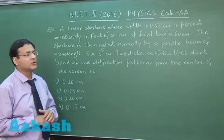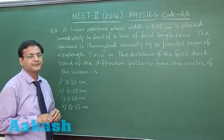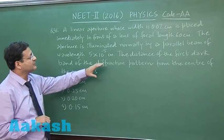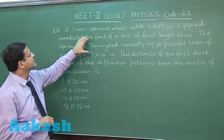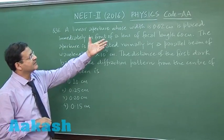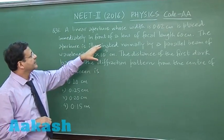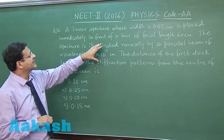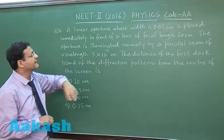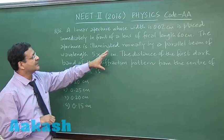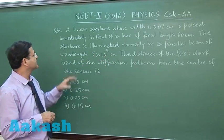Question 38 is based on Fraunhofer diffraction and single slit, in which you are supposed to find out the position of the first dark fringe. It says a linear aperture whose width is given is placed immediately in front of a lens of focal length 60 cm. The aperture is illuminated normally by a parallel beam, so it is a condition of Fraunhofer diffraction.